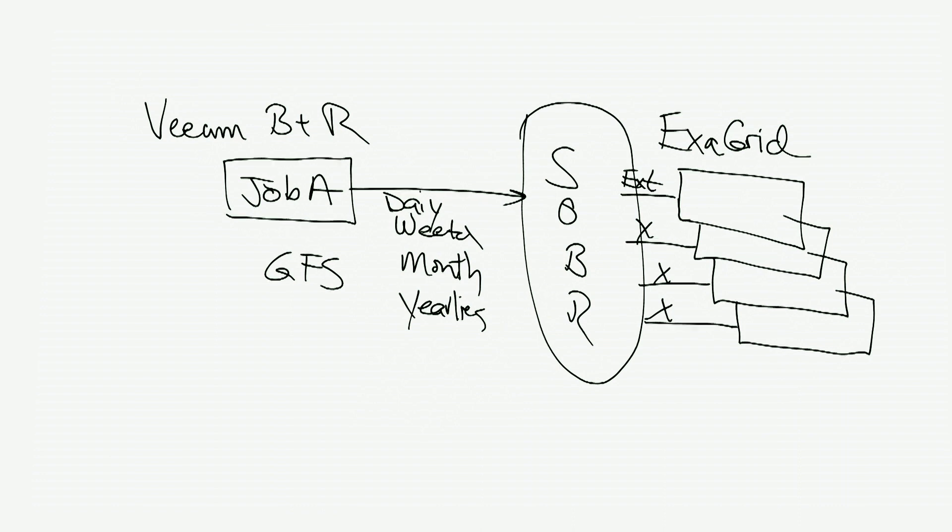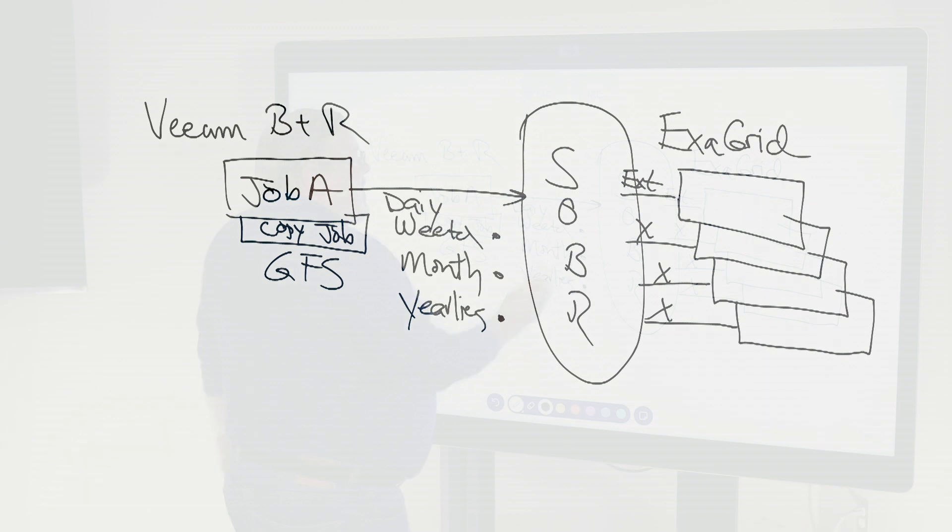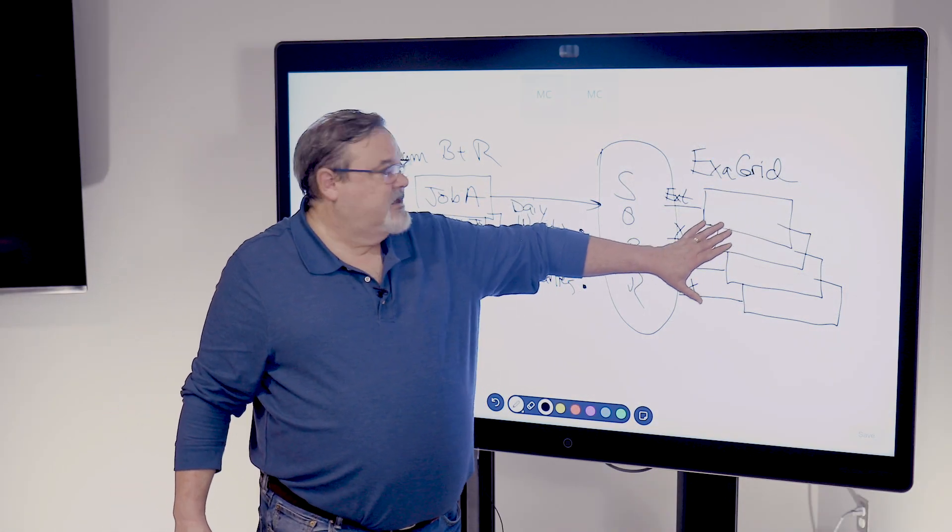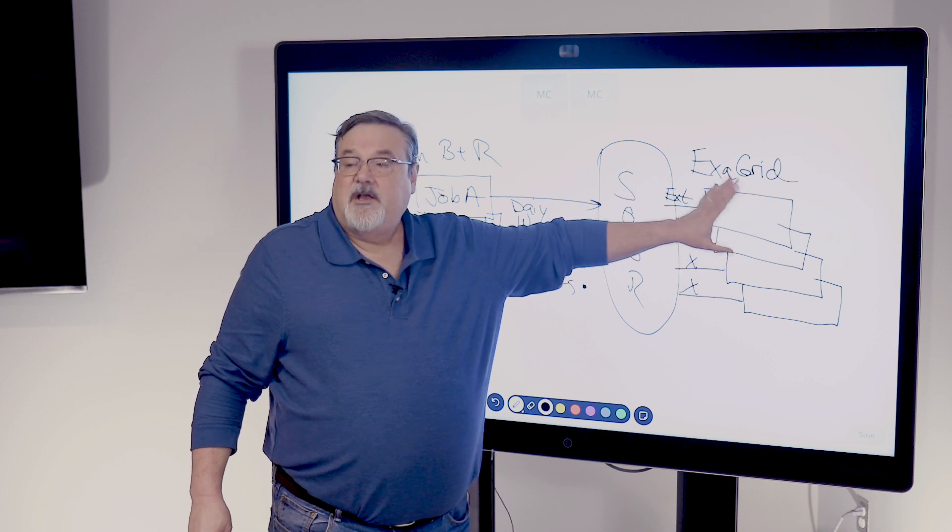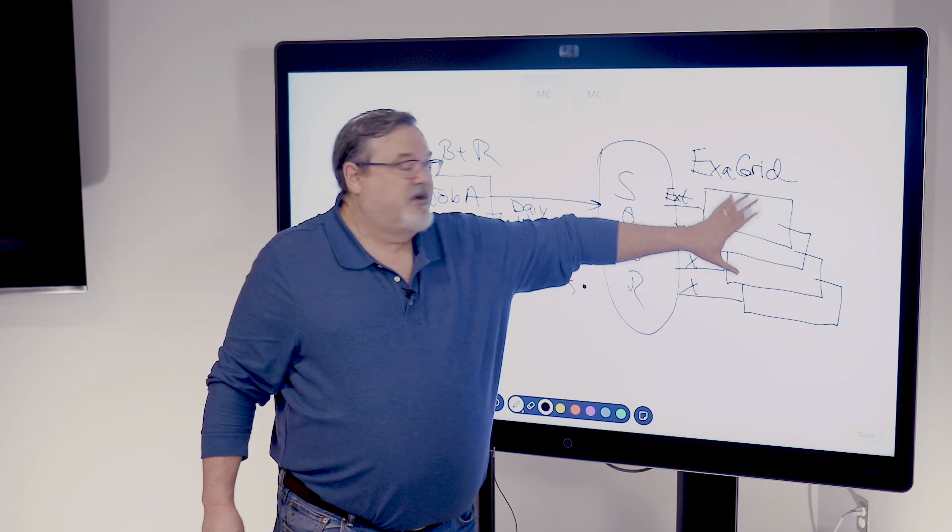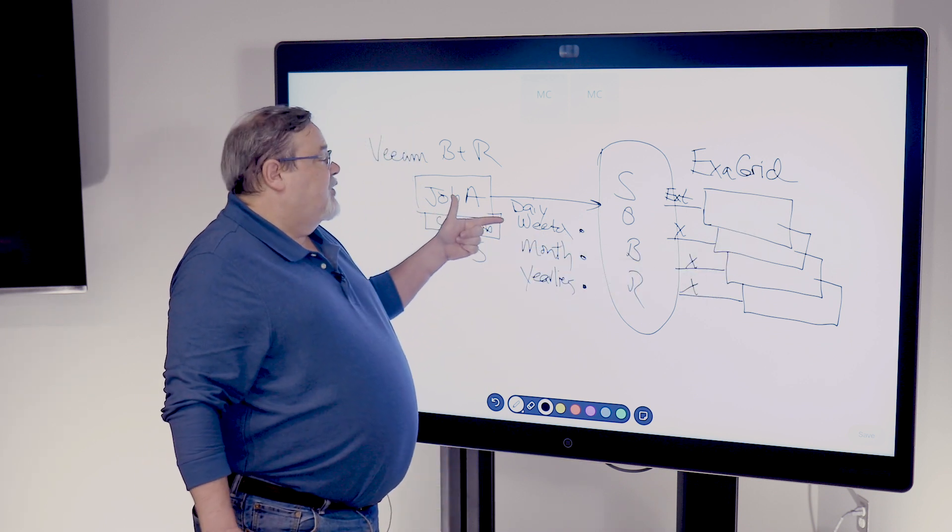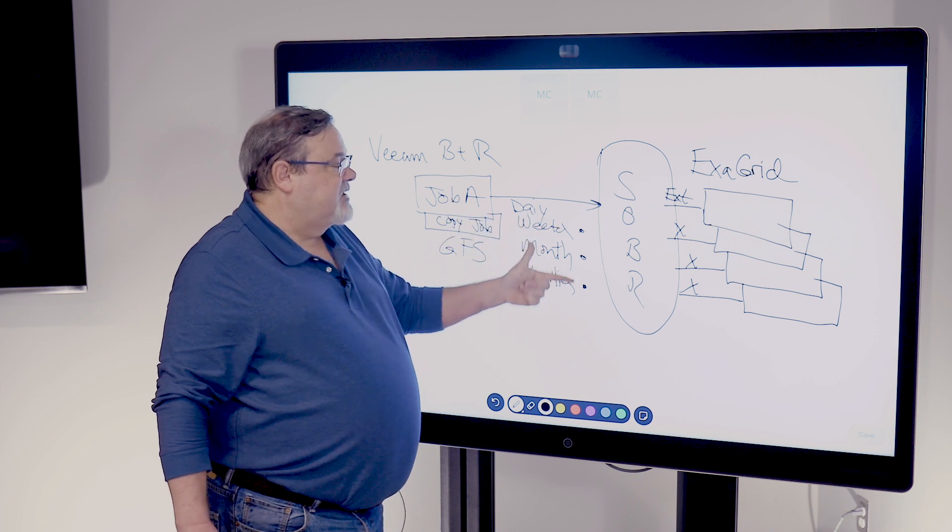In versions of Veeam prior to V10, these longer-term retention and the grandfather-father-son was accomplished by creating a copy job that was associated through this configuration of the first job, job A. And it was the actual copy job that would run and would make literally copies of the backups at the key points in order to give you weeklies and monthlies and yearlies. Making a whole copy of the backup didn't consume any additional storage on the Exegrid because of the deduplication. Since it was a copy, that took very little capacity here. But it was an operation that had to be scheduled or that Veeam had to manage that took time to complete.